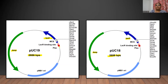Within the lacZα, there is the presence of the multiple cloning site. In both plasmid vectors, pUC-18 and pUC-19, the MCS — that is the multiple cloning site — allows the cloning of the foreign DNA fragment into the vector, inserted into the lacZα.